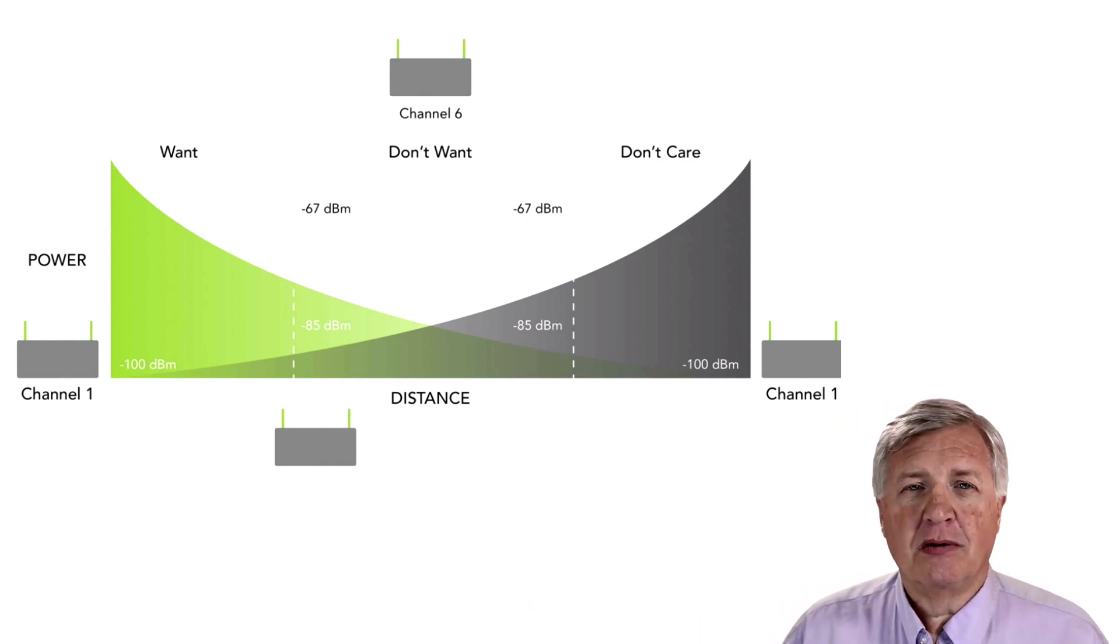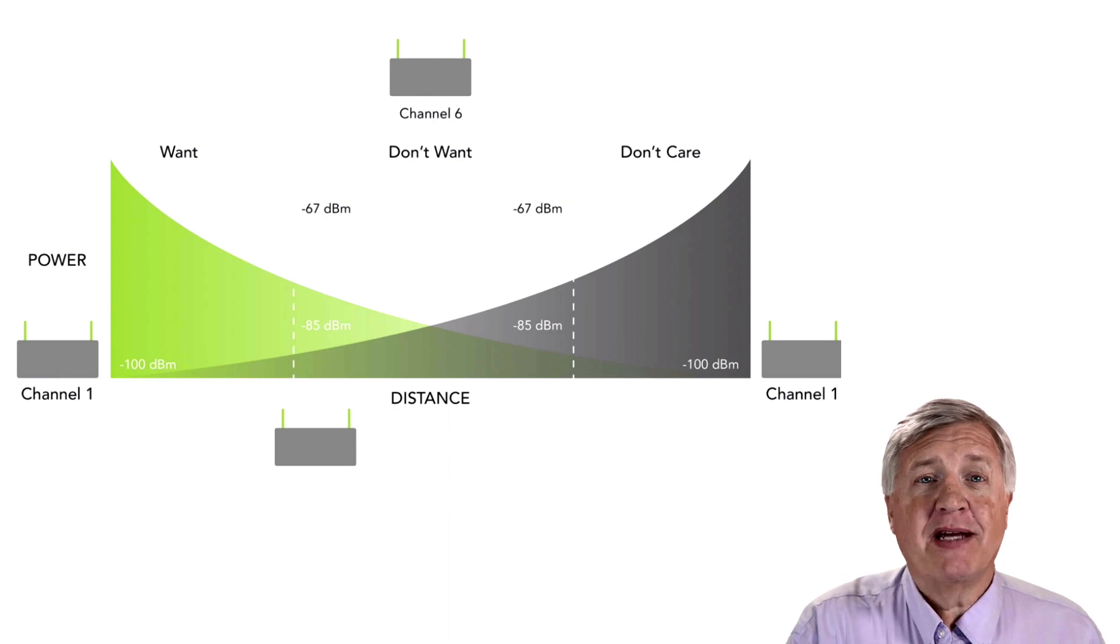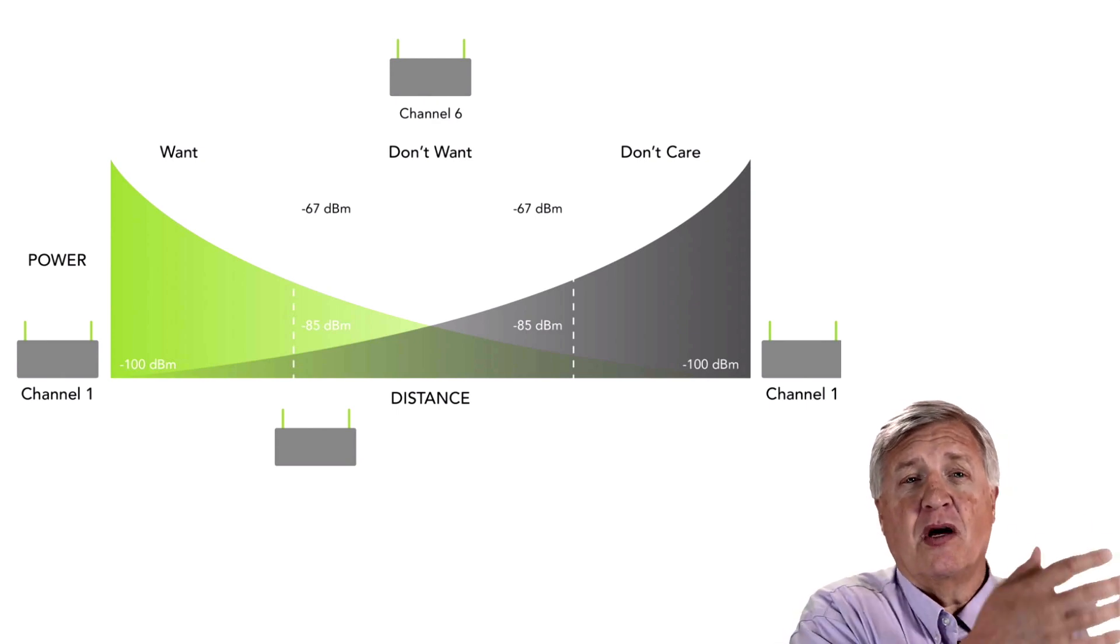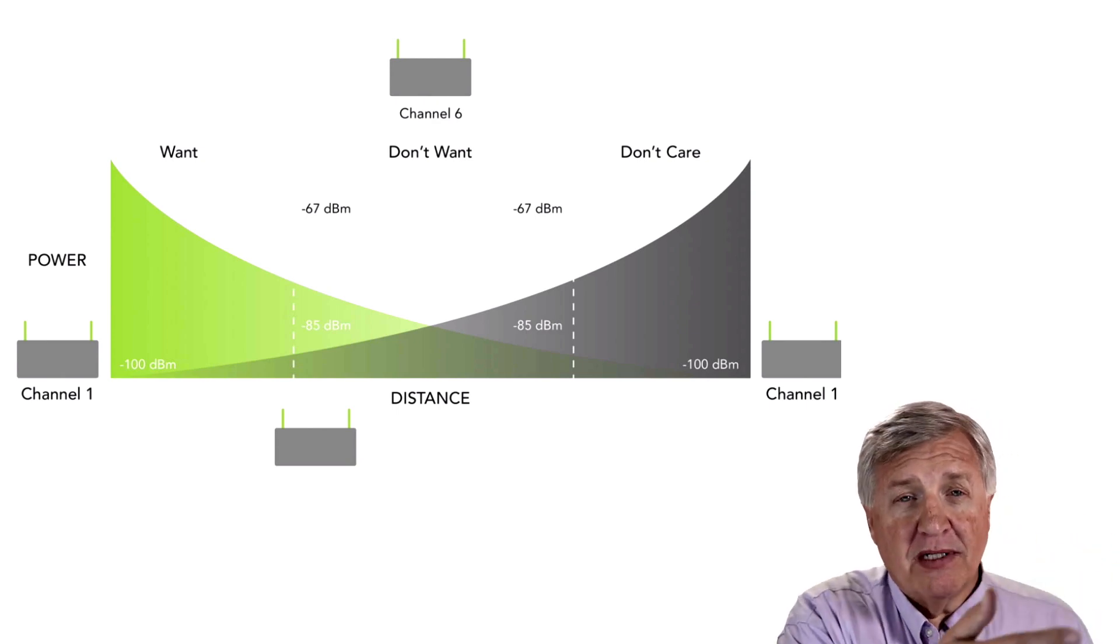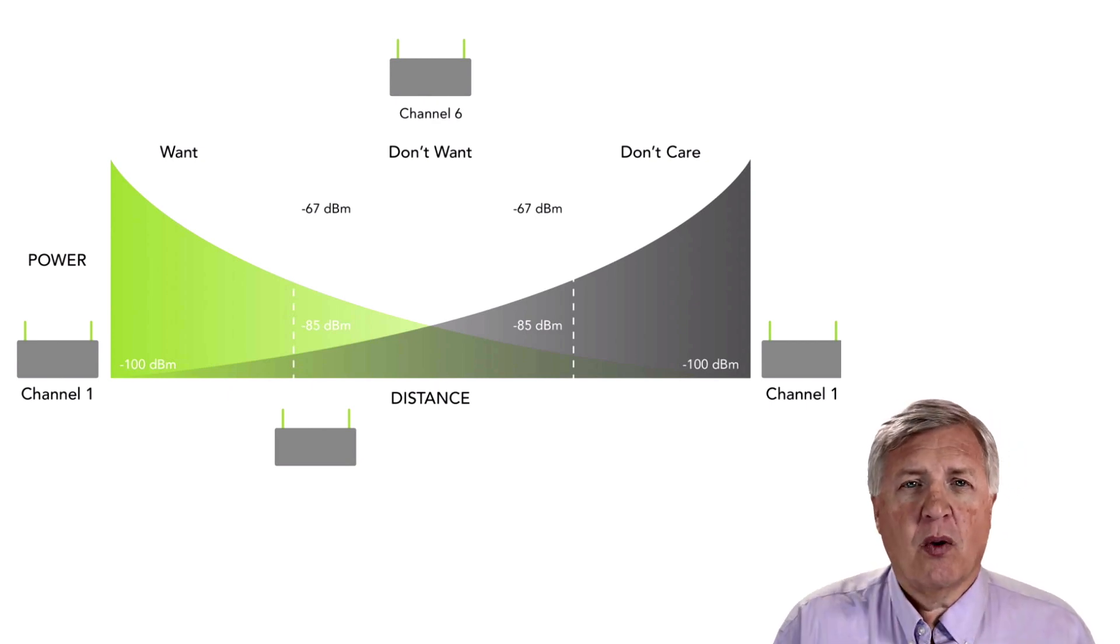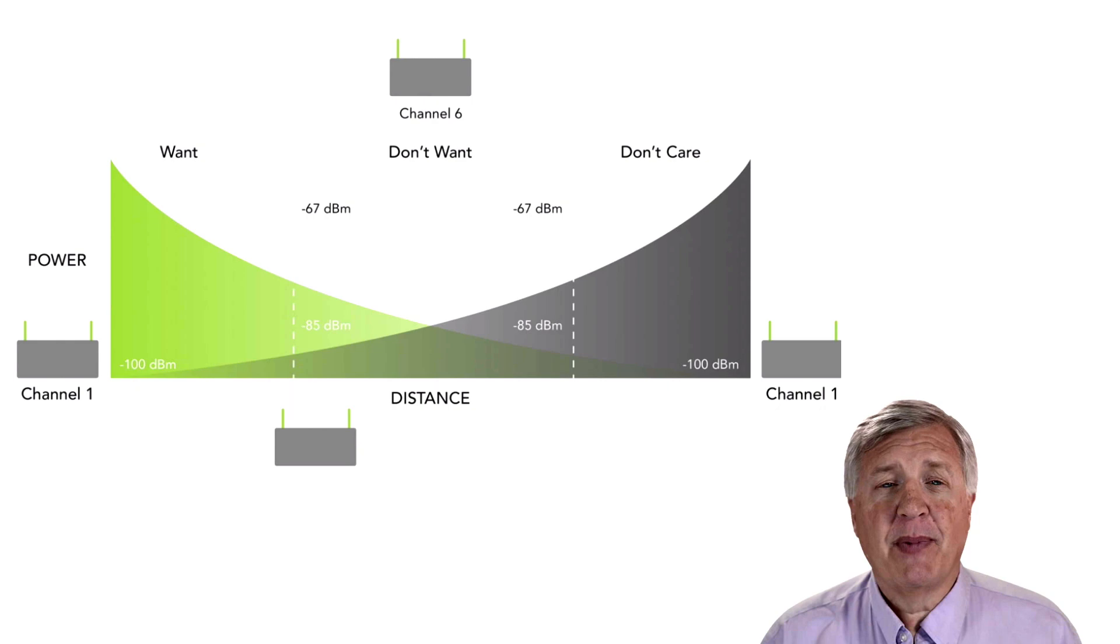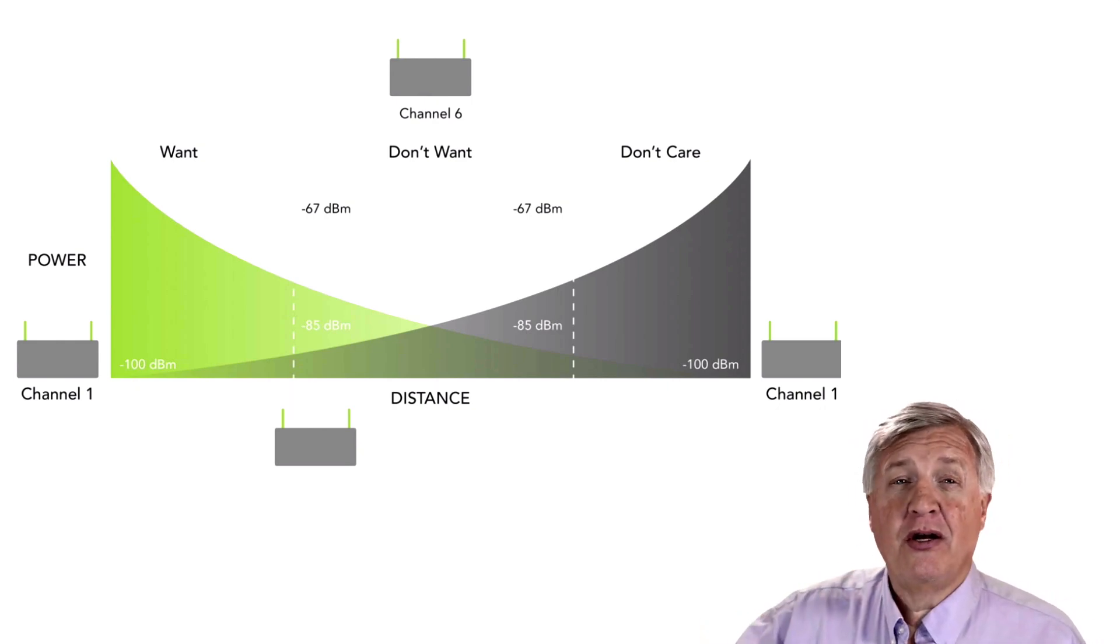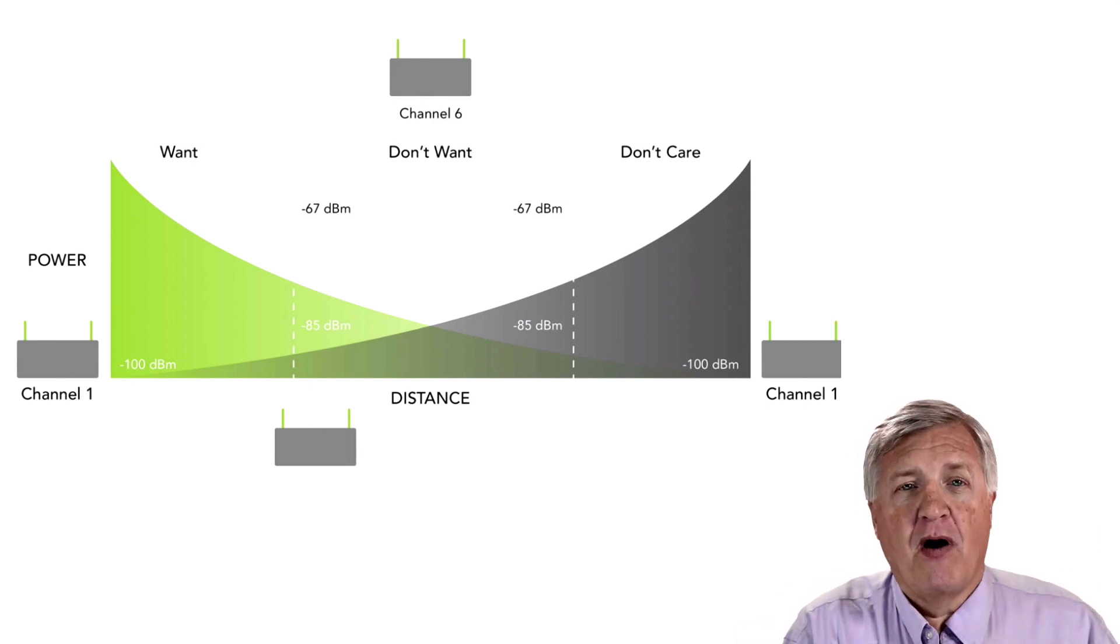I've shown this picture for literally decades about how we have want, don't want and don't care. The want is what we want coming off of an AP. And it's the target that we'd like to see. Perhaps in this case, we have -67. -67 is our target. The signal comes off the AP. Over space, it starts to degrade. Now that's called free space loss. And you can go and study up on how that works. Basically double the distance, quarter the power, and you get this slowly dropping curve.